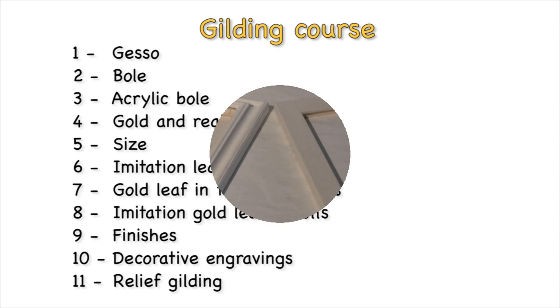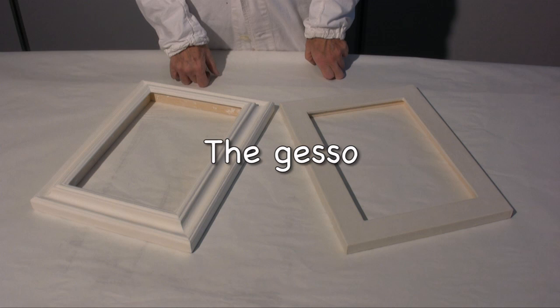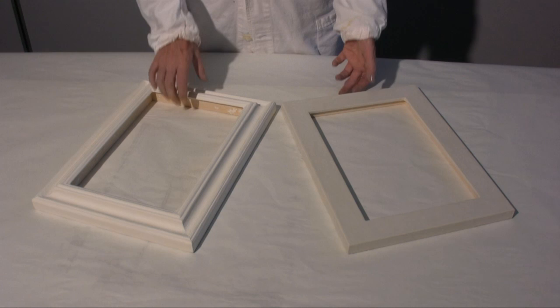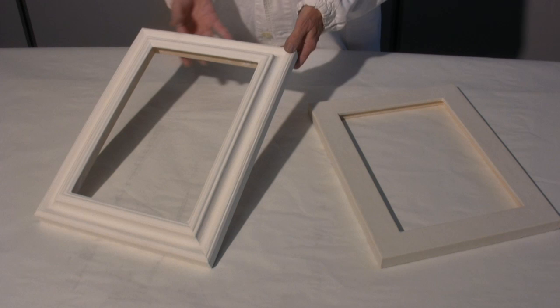The first phase of gilding is applying the plaster. The plaster is needed to close the wood's pores and prepare a smooth surface for the following processes. The frame looks like this after the plaster has been applied.